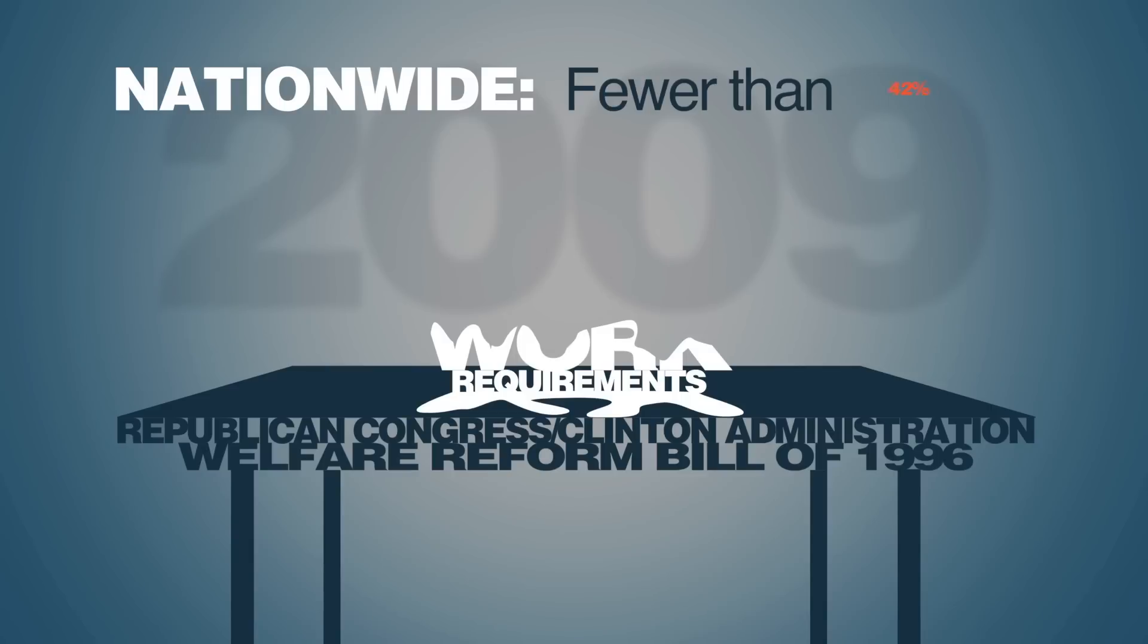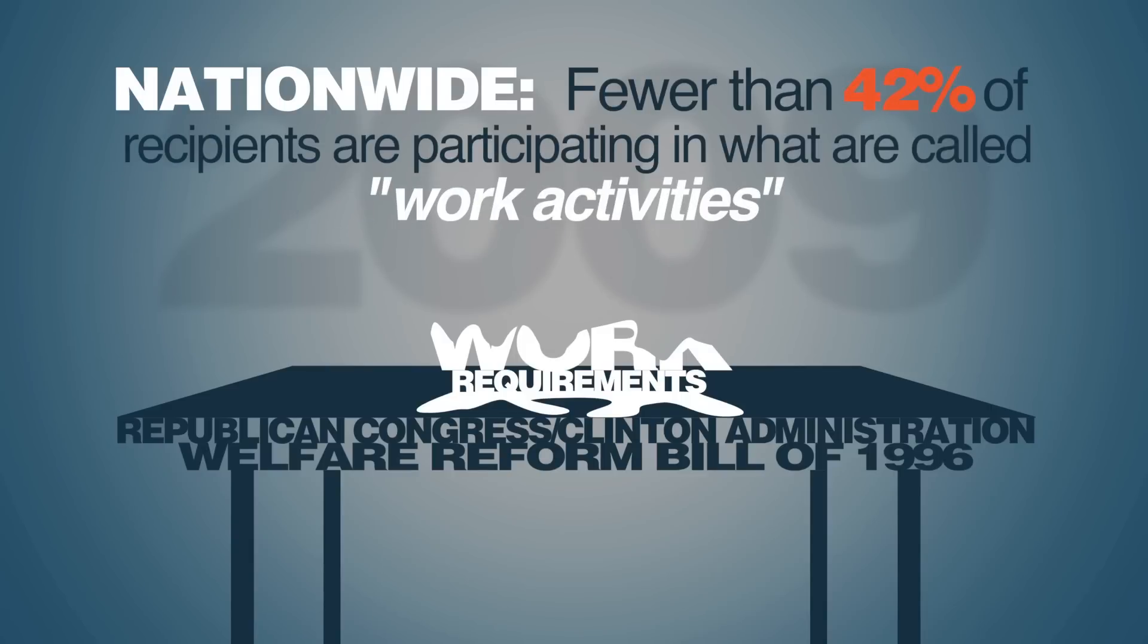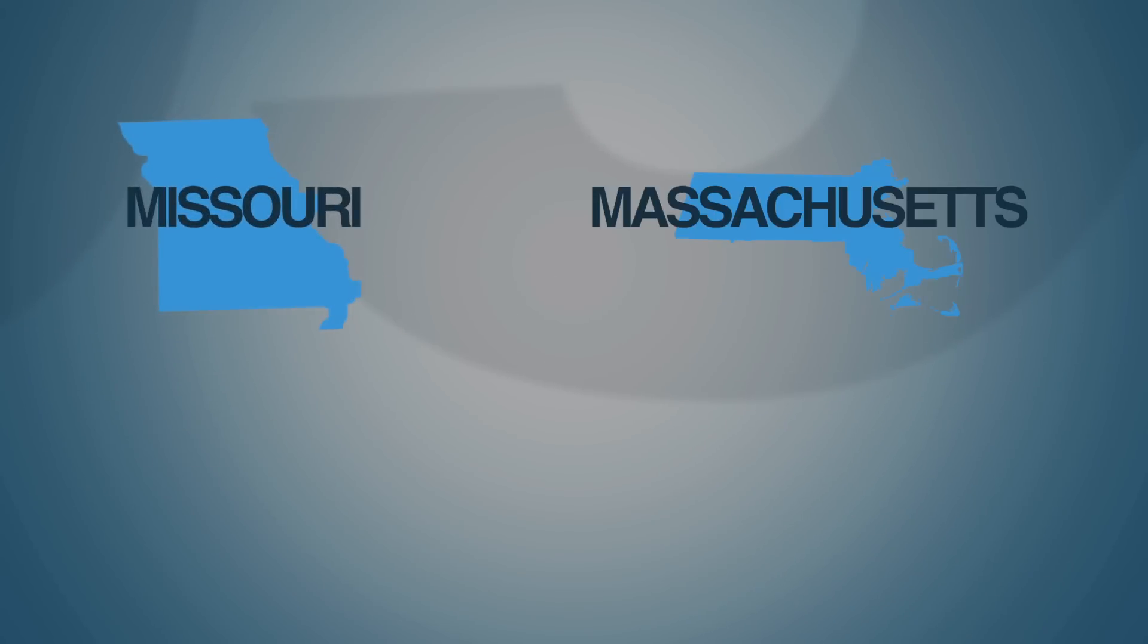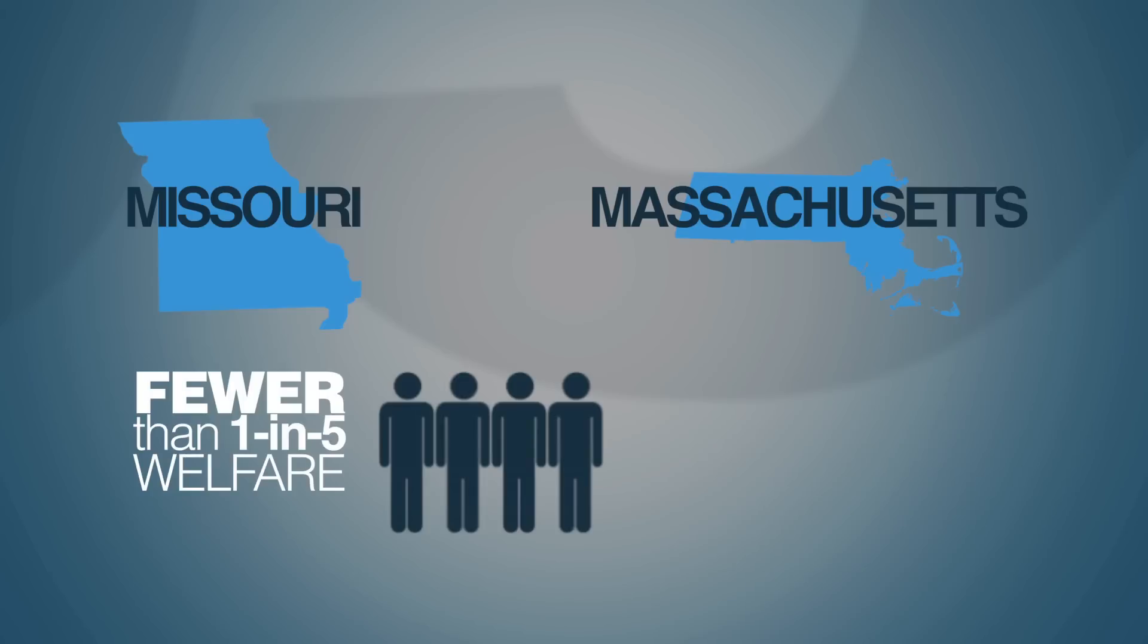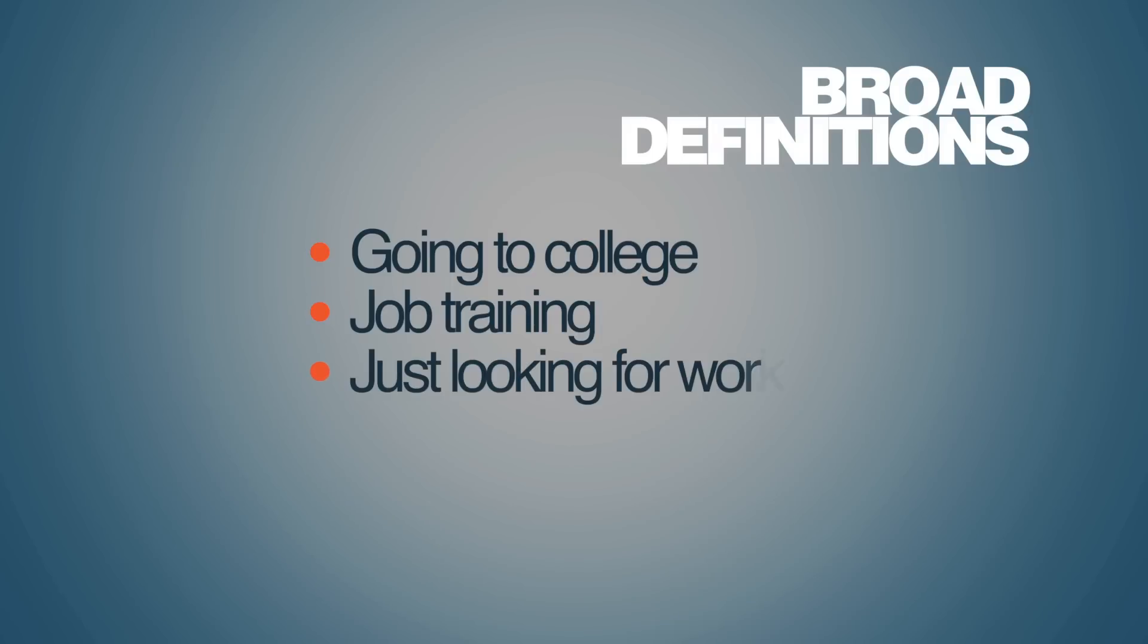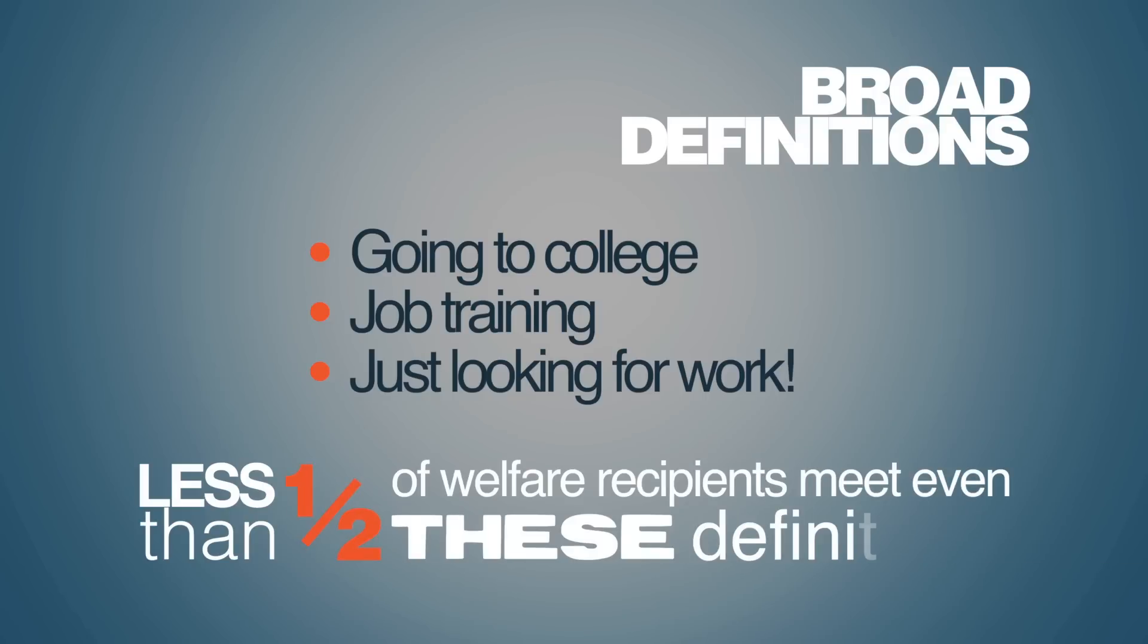Nationwide, fewer than 42 percent of recipients are participating in what are called work activities. In some states, such as Missouri and Massachusetts, fewer than one out of five welfare recipients are working. And that uses a very broad definition of work activity. Going to college can be considered work. Job training can be considered work. Even just looking for work can be considered work. Yet less than half of welfare recipients meet even these definitions.